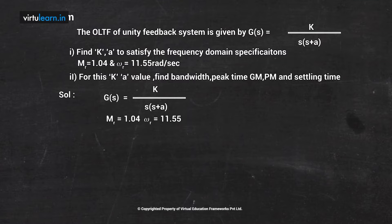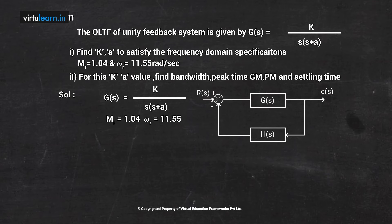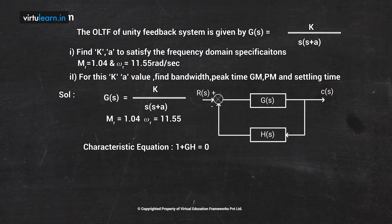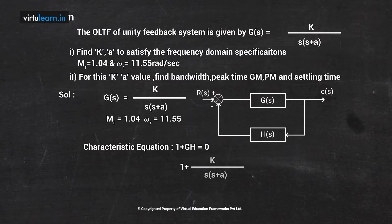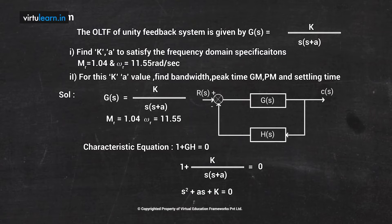The closed loop transfer function uses negative feedback, with H(s) = 1 for a unity feedback system. The characteristic equation is found from 1 + G(s)H(s) = 0, which gives 1 + k / [s(s + a)] = 0, resulting in s² + as + k = 0.